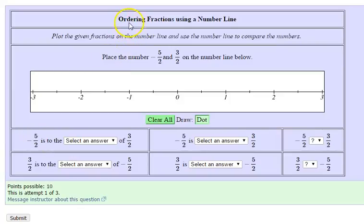In this homework problem, you're asked to order fractions using a number line. Plot the given fractions on the number line and use the number line to compare the numbers. Place the number negative 5 halves and 3 halves on the number line below.